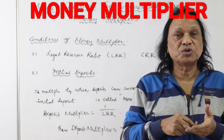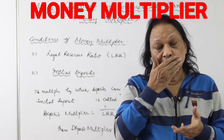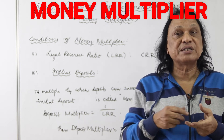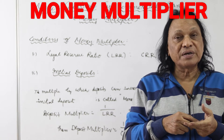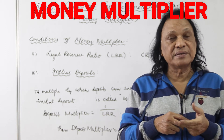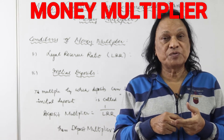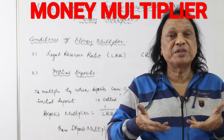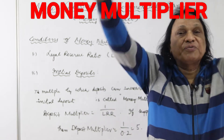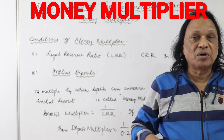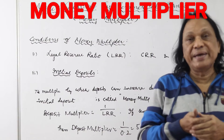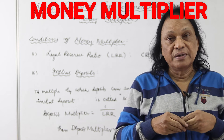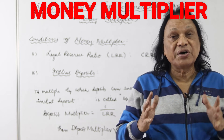Statutory Liquidity Ratio (SLR) is a percentage of cash reserves that commercial banks have to keep with themselves, without giving it as credit. So LRR is the summation of CRR and SLR.